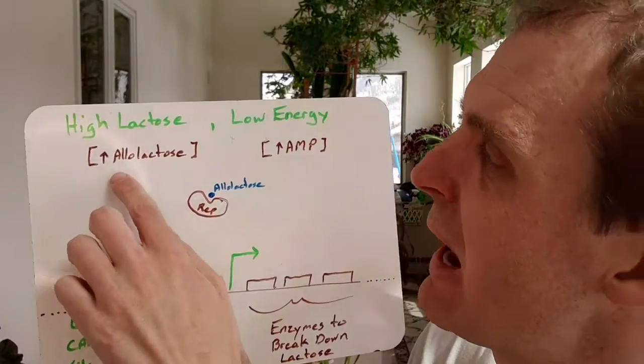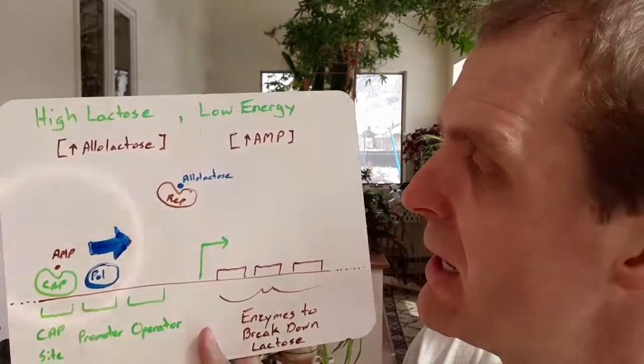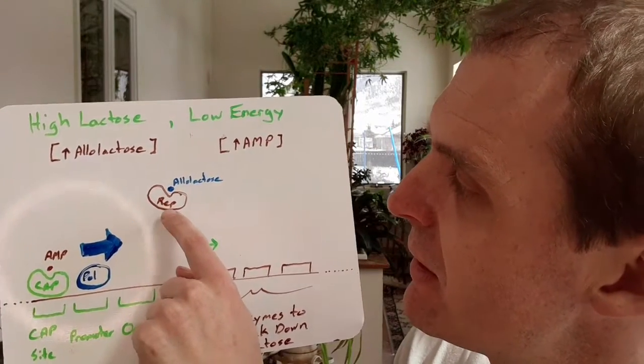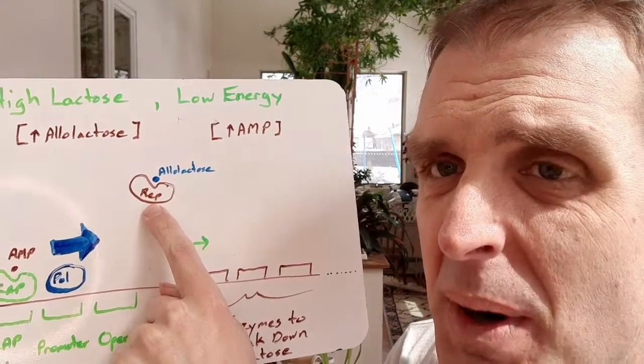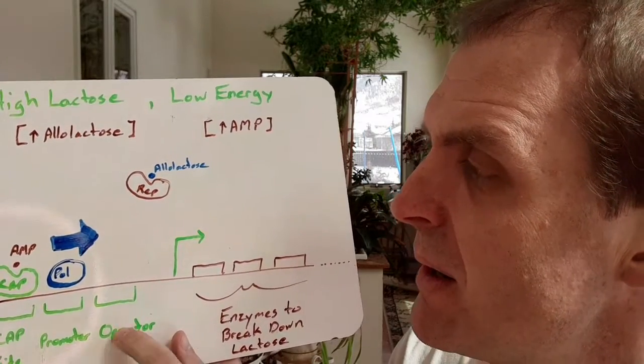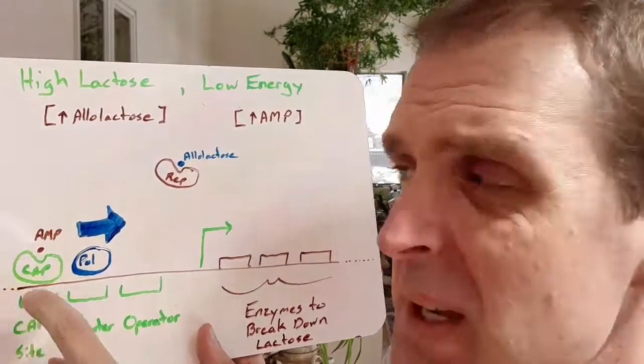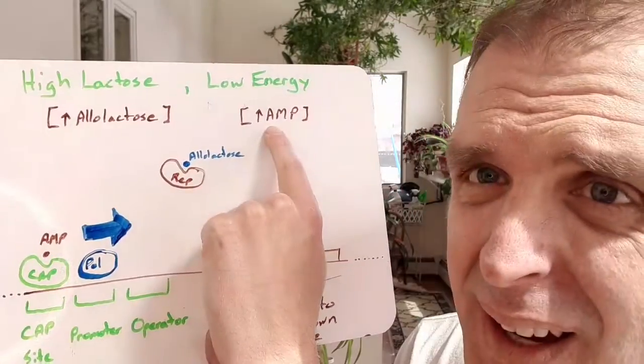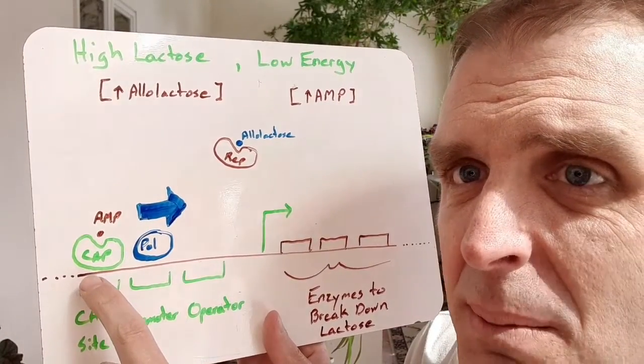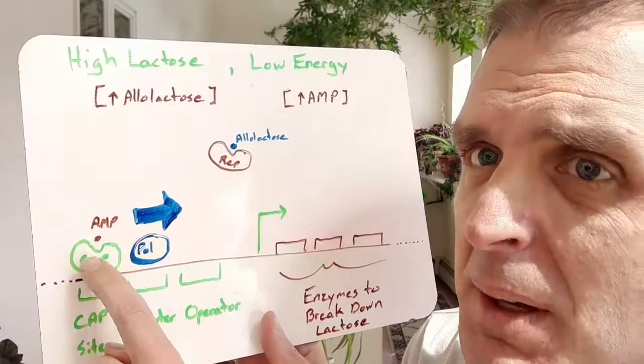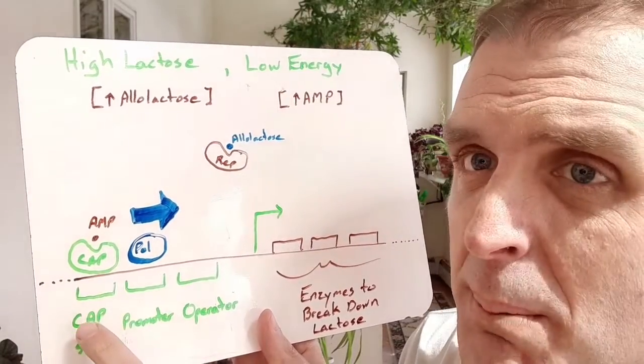Next scenario. Let's say we have high lactose but low energy, and that means that your allolactose is present, and so your repressor is not binding to the operator. Your AMP is going to be abundant, and that will make, in this case, bound to CAP.